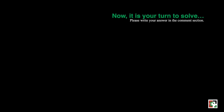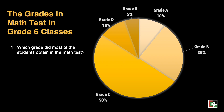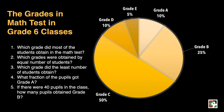Now it is your turn to solve. Please write your answer in the comments section. We have here the grades in math tests in Grade 6 classes: Grade A — 10%, Grade B — 25%, Grade C — 50%, Grade D — 10%, and Grade E — 5%. Questions: First, which grade did most students obtain? Second, which grades were obtained by an equal number of students? Third, which grade did the least number of students obtain? Fourth, what fraction of pupils got Grade A? And fifth, if there were 40 pupils in the class, how many obtained Grade D?